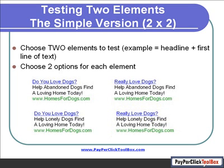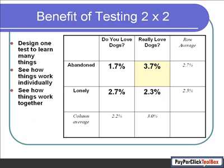So we're testing two headlines and two pieces of body copy. We want to know not only which headline works best or which word in the body copy works best, but what the best combination of headline and body copy is. This is called a full factorial model — for lack of a better term, an all-combinations model — because you're using all combinations of all the factors. You're testing 'Do you love dogs' and 'Really love dogs' with ads that say 'abandoned' and 'lonely,' winding up with four ads (two times two). The numbers in big bold black are the actual ad results, and you can also take averages across the rows and columns.